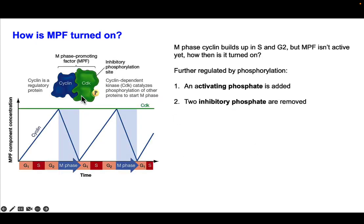This led them to conclude that cyclin is the protein whose expression is cyclical, and it controls the activity of CDK. Cyclin — in this case for MPF — begins building up in G1, S, and G2, and then plummets again in M phase. You might notice that this protein is building up in S and G2 but is not yet active until the cell reaches M phase. So why isn't it turned on? We know now that further regulation is needed to turn on the CDK.